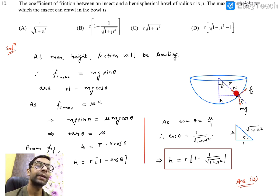That means we need to know how much this angle is to find the maximum height. If this is theta, then this distance is r cos theta. From the figure, h value is r minus r cos theta, that means h equals r times (1 minus cos theta).